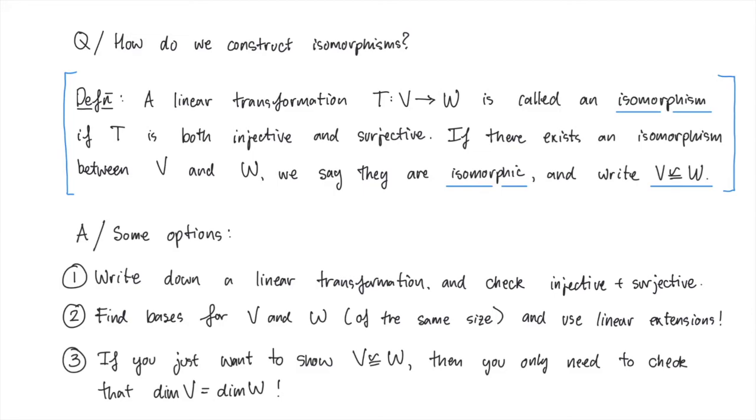The third and final option is great when you don't need to describe the isomorphism between V and W explicitly. If V and W have the same dimension, then they're isomorphic. This is one of the main theorems from this section. In other words, find bases for V and W and just count. If they have the same size, then V and W are isomorphic. End of story. The only drawback here is that this does not provide you with an explicit isomorphism if you need it.